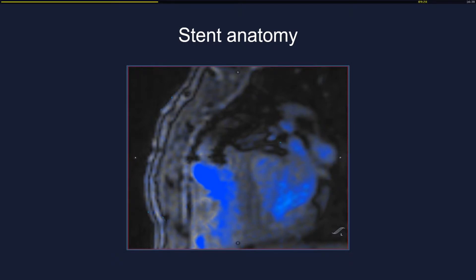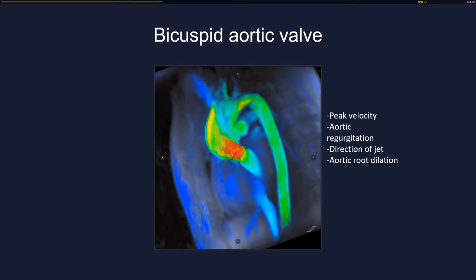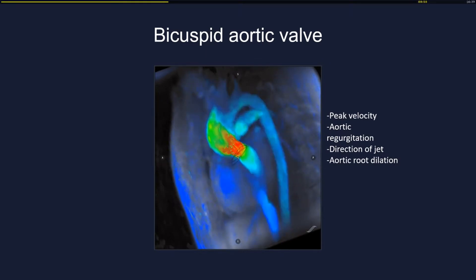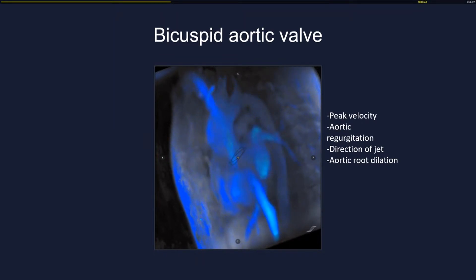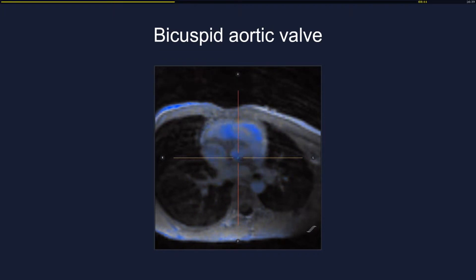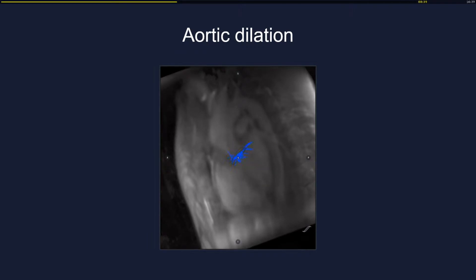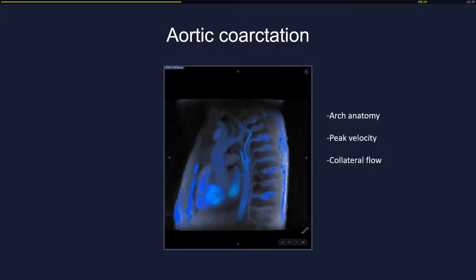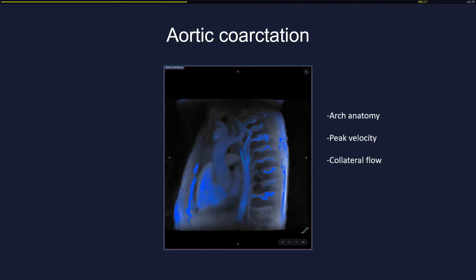Regarding valvular heart disease, as already discussed, this sequence has a big capacity to analyze valvular stenosis, and you may obtain the same image quality in children. You may estimate peak velocity, aortic regurgitation, direction of the jet, estimate and calculate aortic dilation in 2D images from the 4D flow sequence, and analyze streamlines to understand which part of the aorta is going to dilate. In aortic coarctation, 4D flow adds a lot of important information. Not only may you have the essential surgical information for arch anatomy, make all your measurements, calculate peak velocity, and calculate collateral flow, but also estimate the real physiology.